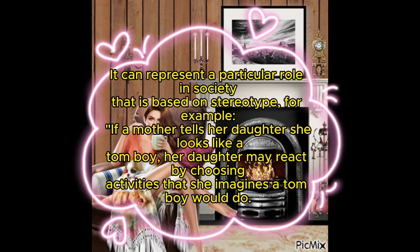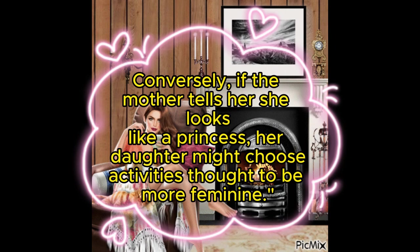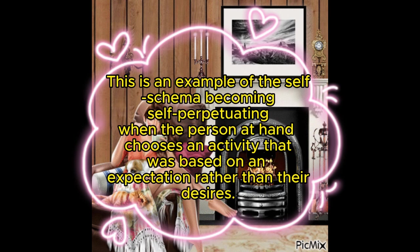For example, if a mother tells her daughter she looks like a tomboy, her daughter may react by choosing activities that she imagines a tomboy would do. Conversely, if the mother tells her she looks like a princess, her daughter might choose activities thought to be more feminine. This is an example of the self-schema becoming self-perpetuating when the person at hand chooses an activity that was based on an expectation rather than their own desires.